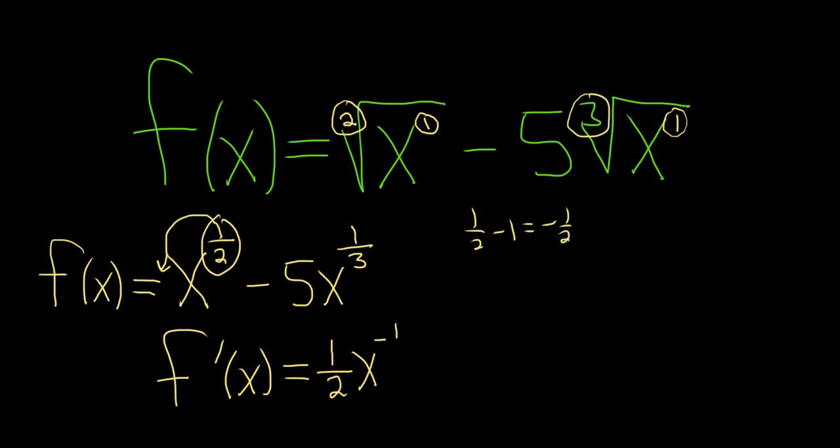So negative 1 half, minus... and then here we'll bring down the 1 third. So minus 5 thirds. 5 times 1 third is 5 thirds. Then we have x, and then 1 third minus 1 is really 1 third minus 3 thirds, which is negative 2 thirds.